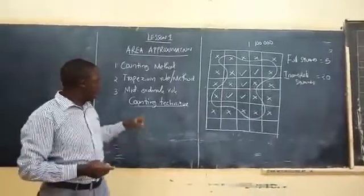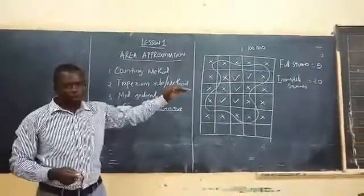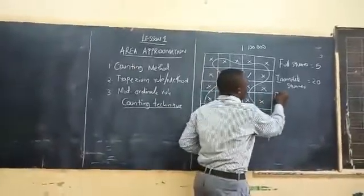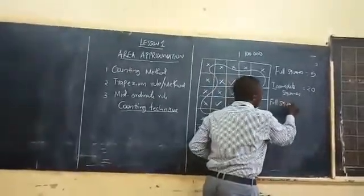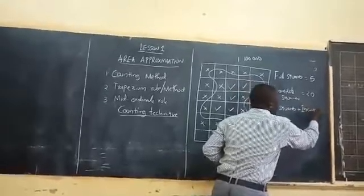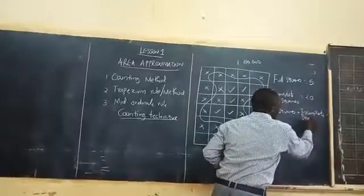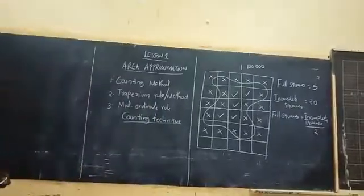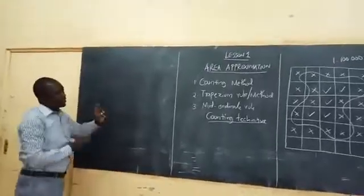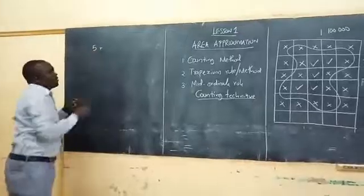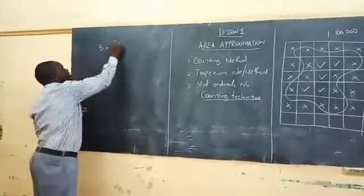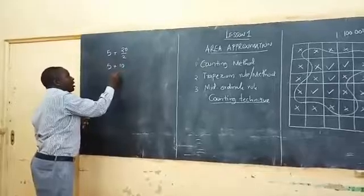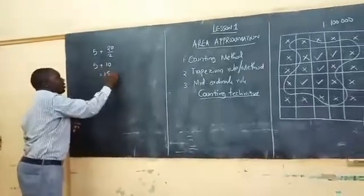When we are using this formula of the counting technique, we are going to use a formula to get the area of this object. The formula is: the number of full squares plus the number of incomplete squares divided by two. The number of full squares in our case was five, plus the number of incomplete squares which is twenty divided by two — that gives us five plus ten, and the answer is going to be fifteen square centimeters.